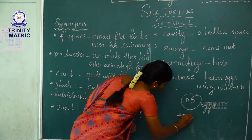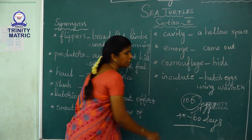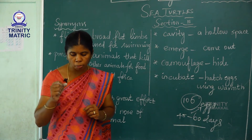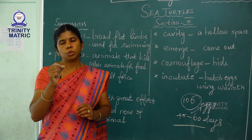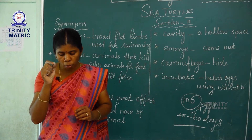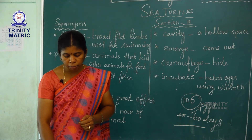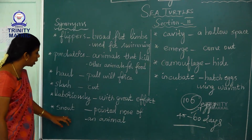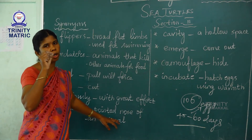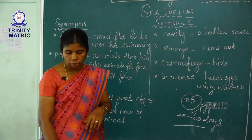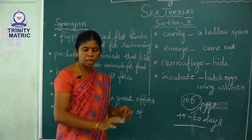Those eggs that escape such people and predators hatch 45 to 60 days later. After the hatchling slashes open the leathery shell with the help of a tiny egg tooth, it comes out. This egg tooth is like a razor blade at the tip of the hatchling's snout. Snout is a word that denotes the pointed nose of an animal — the short pointed nose tip of an animal.